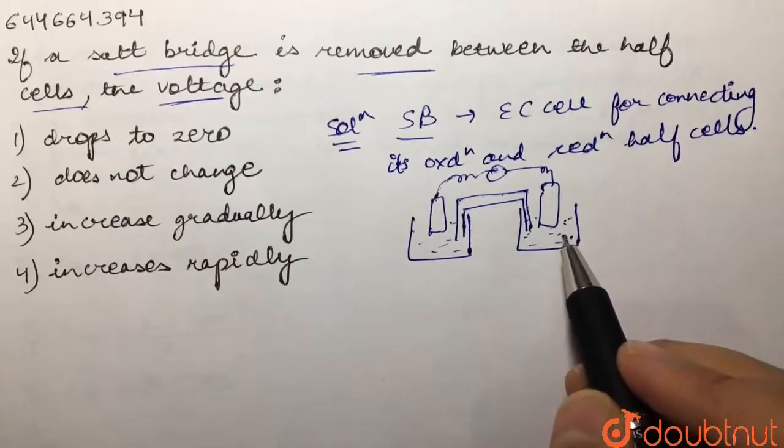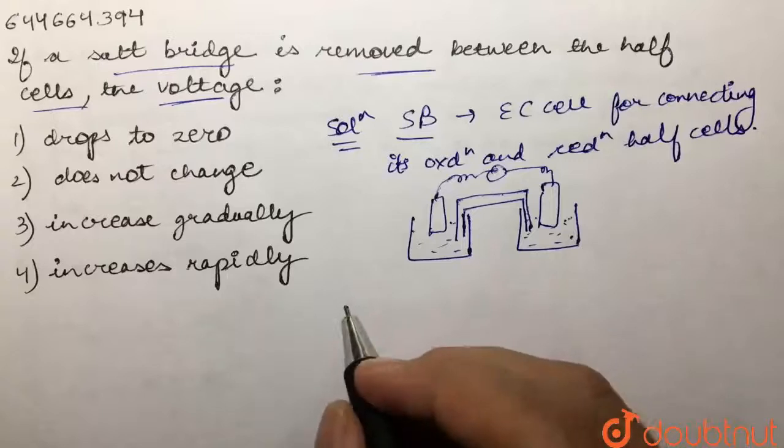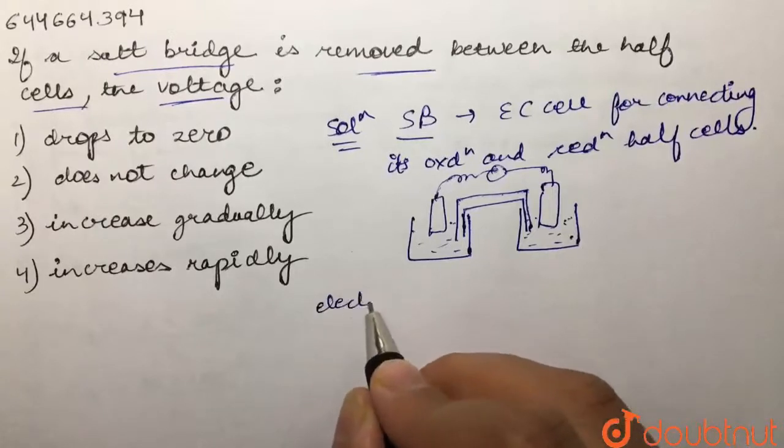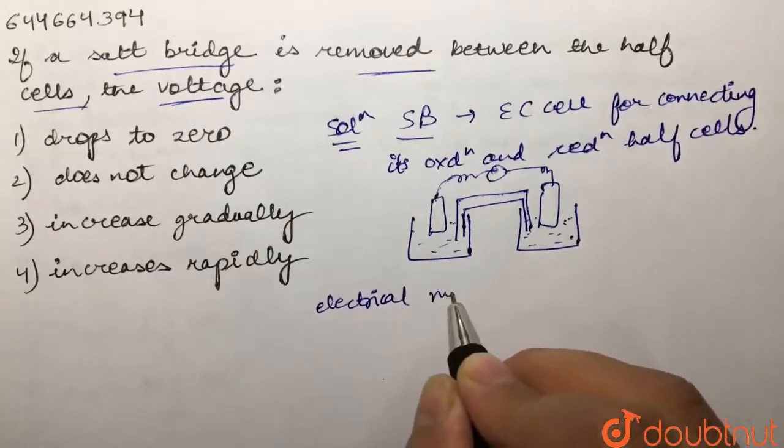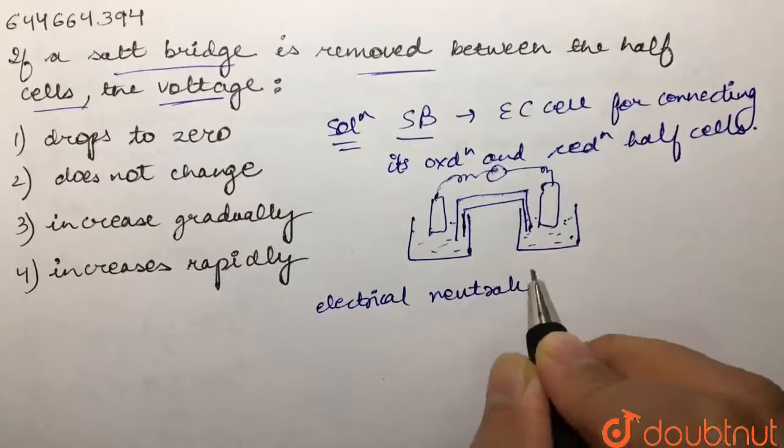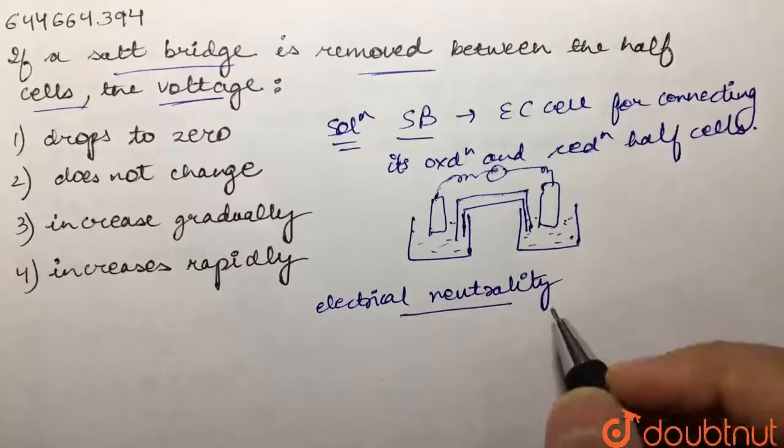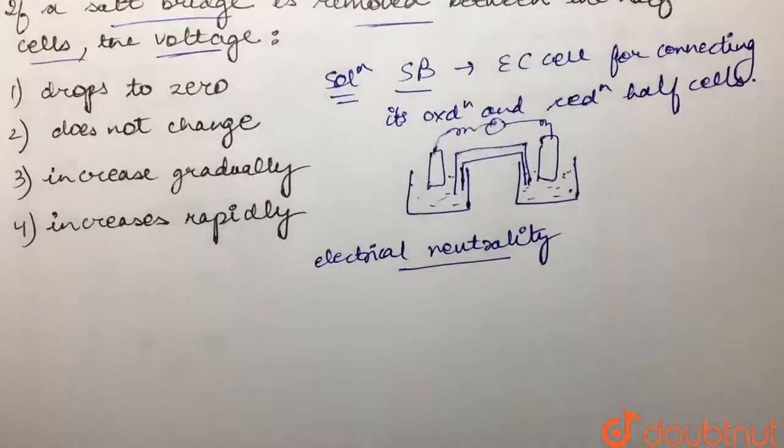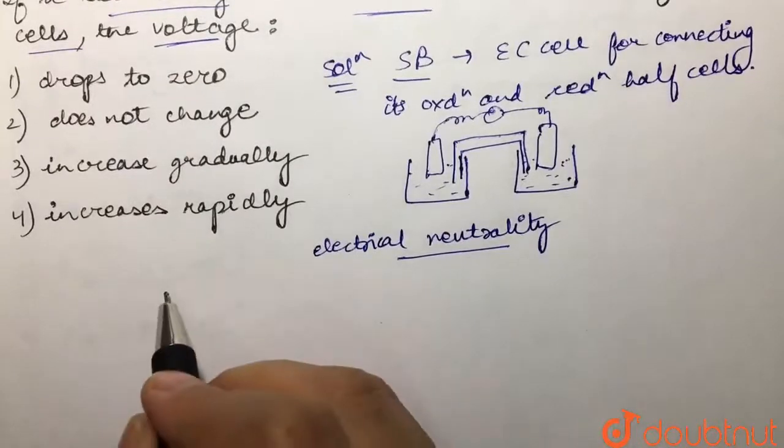cells. What happens is that it helps to maintain the electrical neutrality within the internal circuit. If no salt bridge is present, what would